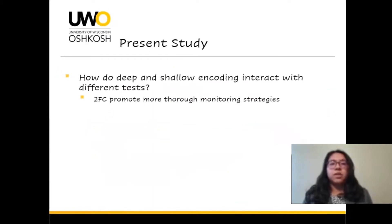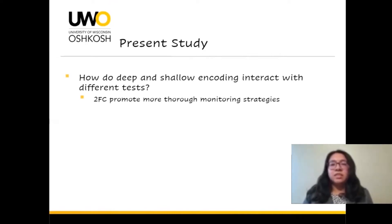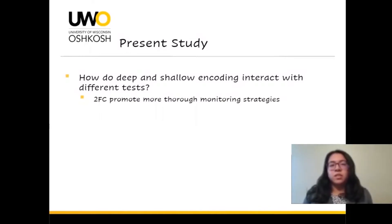In the present study, we wanted to explore how deep and shallow encoding interact with different tests in the DRM paradigm — specifically if a two-forced choice test promotes more thorough monitoring strategies. If it does, then better performance should be shown when testing shallow encoding on a two-forced choice test than a yes-no test. These findings will hopefully help us discover the mechanisms responsible for memory errors and how memories work. This could even call into question how much we should trust our memory, including things like witnesses who believe they remember something but whose memory has been tainted.